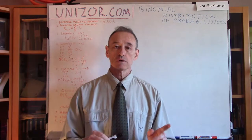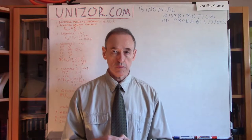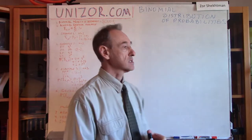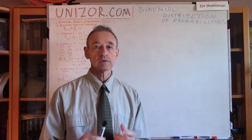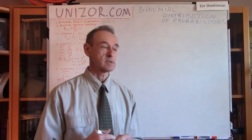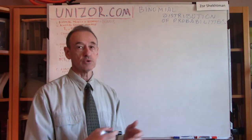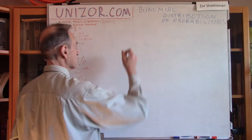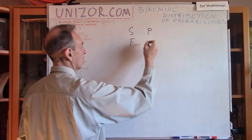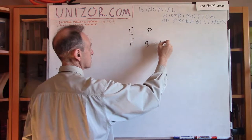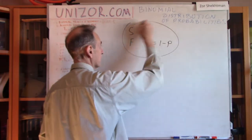In one of the previous lectures, I have already described what binomial distribution of probabilities is. Let's consider you have a certain number of Bernoulli trials. A Bernoulli trial is a trial which has only two different results: success or failure. There is a probability of success, p, and the probability of failure is q, which is 1 minus p.